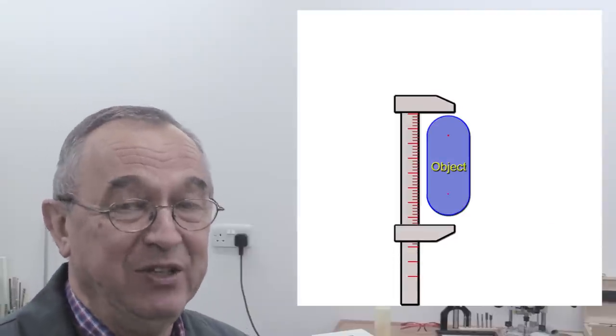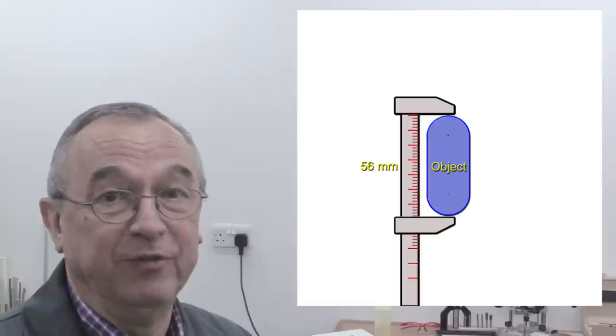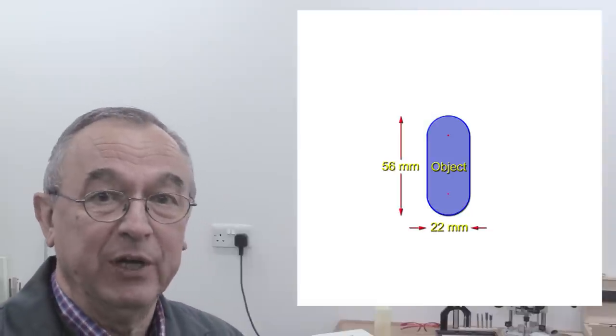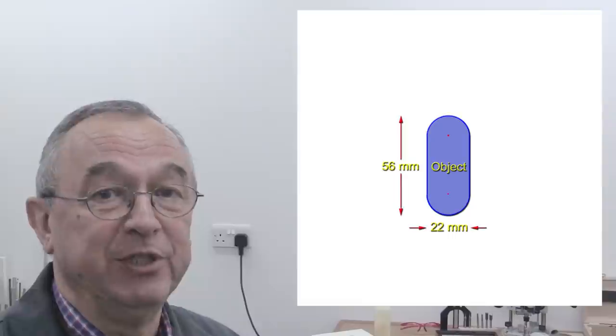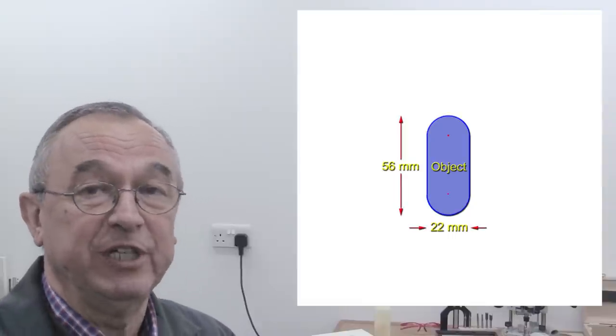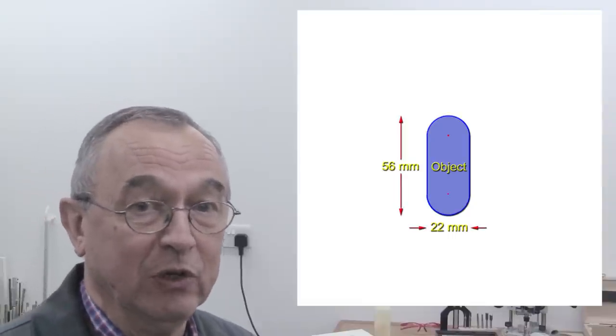And I'm assuming that the ends of this object are perfectly round. Now, in our case, the object is 22mm wide and it's 56mm long.